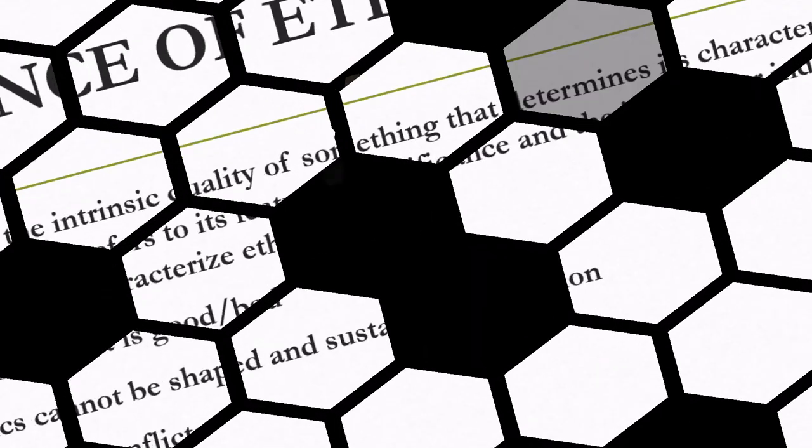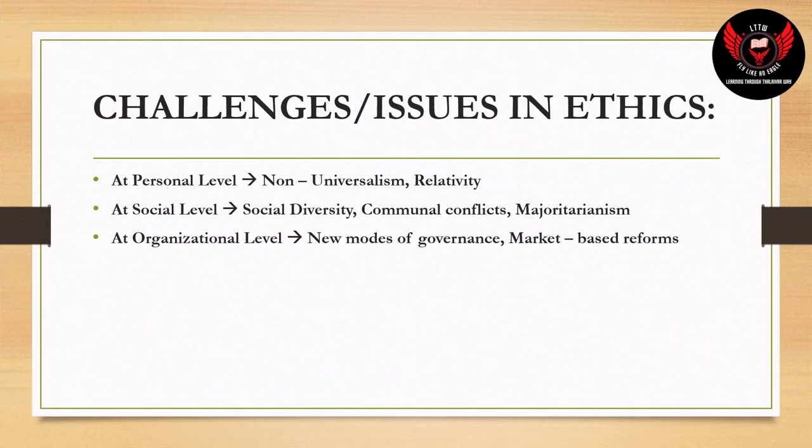Now let's dive into the challenges and issues in ethics, again divided into personal, social, and organizational levels. At the personal level: non-universalism and relativity. Non-universalism means something is present in only one type of society — for example, Jainism believes in vegetarianism but Islam and Christianity do not. Relativity means personal ethics are often subject to time and place: in the USA, free speech is considered a fundamental right, whereas China can restrict freedom of speech in the national interest.